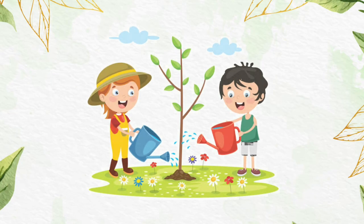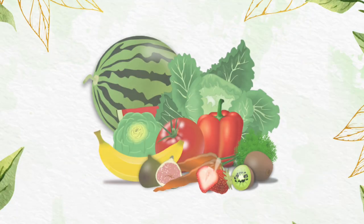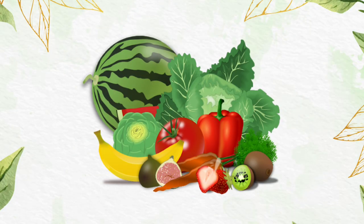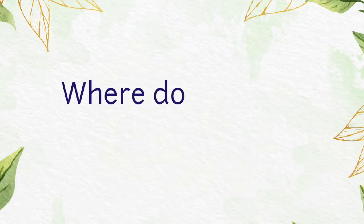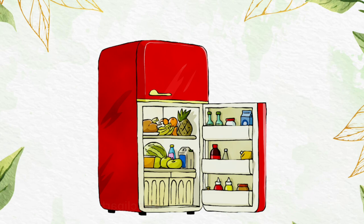You know, children, plants are very important part of our life. Why? Because they give us oxygen and they are the main source of food as we get fruits and vegetables from them. Children, where do we store our extra food? Yes, we store it in refrigerator, right?